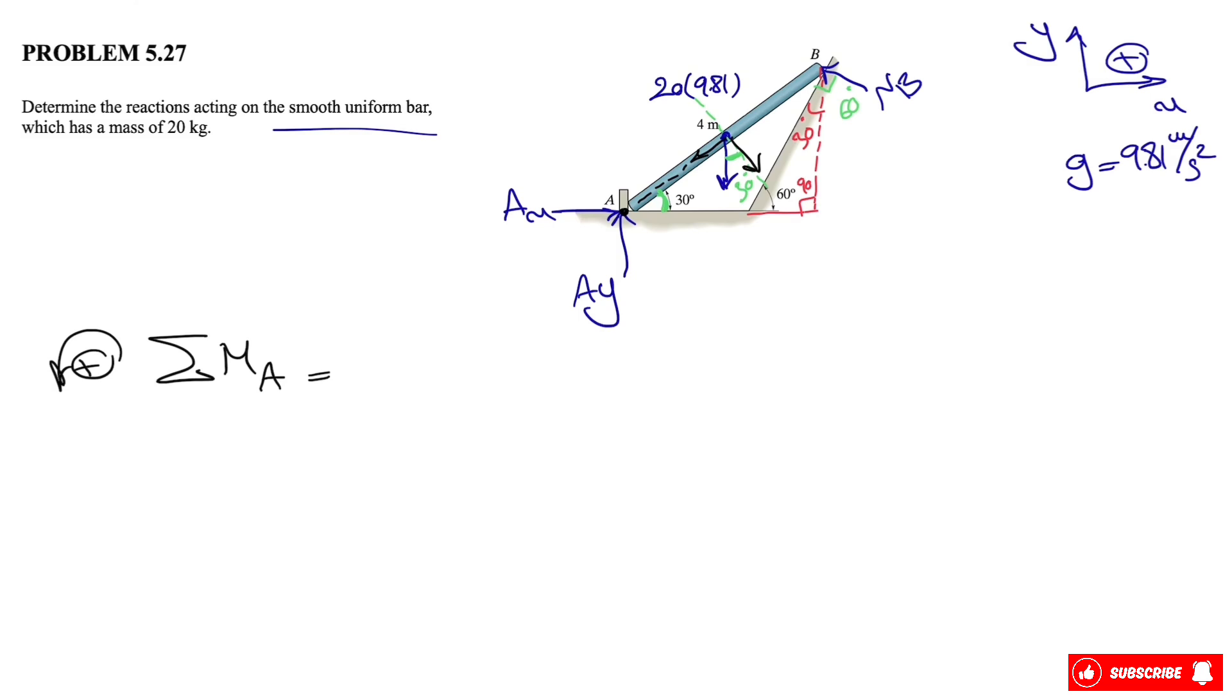We know it has these two components if you break it down. And we know that the one that goes through the point A won't make any moment, but the other which is perpendicular to the beam can make a moment. And we know that force is, first of all, going to make a clockwise moment, so we have a negative sign.